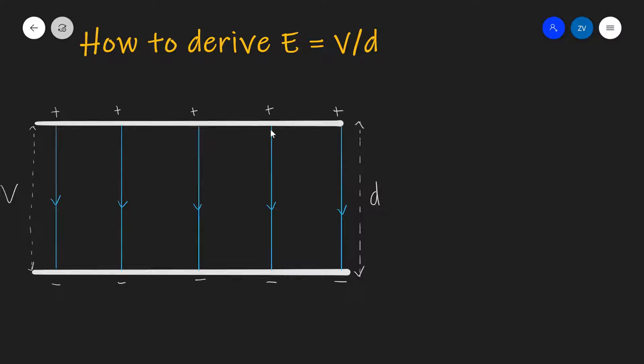If this electric field accelerates a charge from the positive to the negative plate, some work will be done on this charge. We can write down the expression for the work done as W is equal to force times distance.